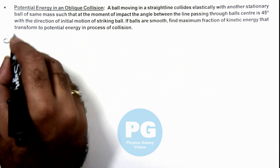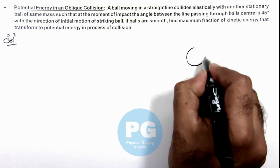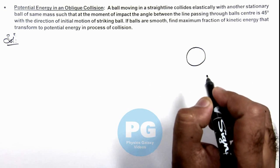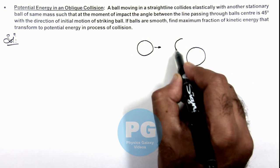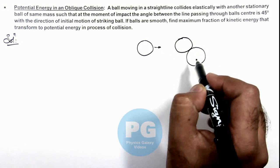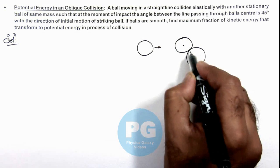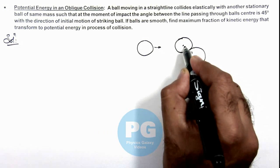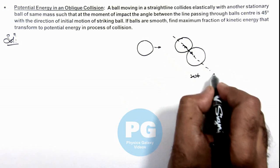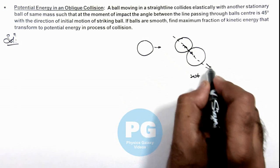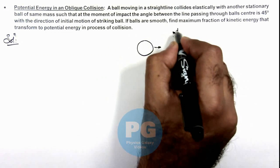To understand the situation better, we draw the picture where one ball is at rest and another identical ball is moving toward it. When it strikes, the balls are identical and at the point of collision, since the stationary ball was at rest, it experiences an impulse in the direction along the line joining the two centers. This ball starts moving in the direction of that impulse, say impulse j in this direction, while the other ball experiences an impulse j in the opposite direction.